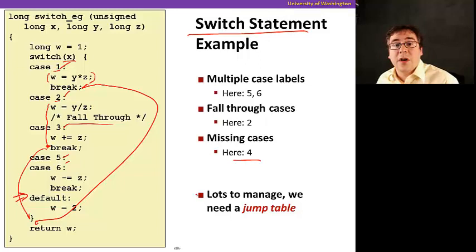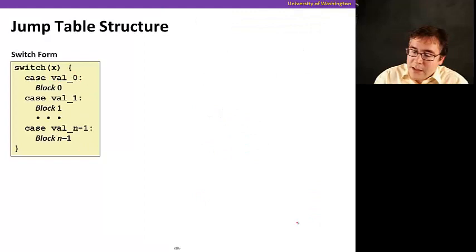And why you could implement this with branch instructions that we saw earlier, it gets really complicated quickly. So another way of implementing this is using what we call a jump table.